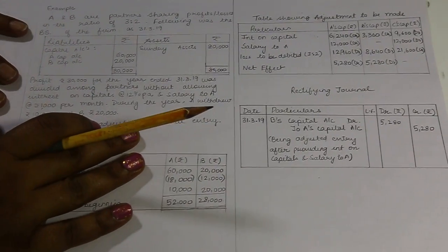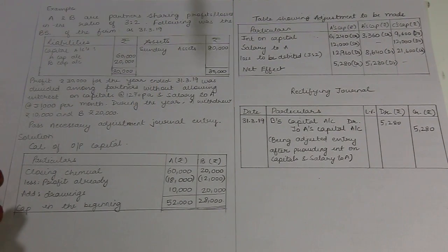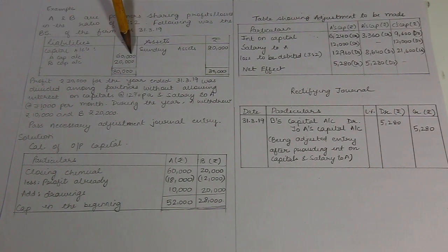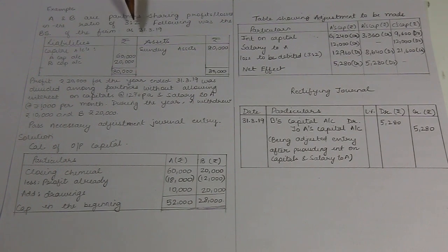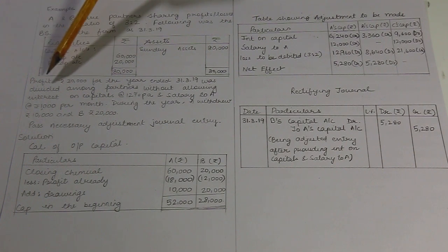Let us take one more example for more clarity. A and B are partners sharing profits and losses in the ratio of 3 to 2. The following was the balance sheet of the firm as on 31st March: Capital account of A stands at Rs.60,000 and B at Rs.20,000; Sundry assets Rs.80,000. This is their closing balance sheet, and further information is given.